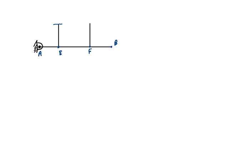These two wires are supported at points C and D respectively. Point B is loaded with a vertically downward force P. The two wires supporting the bar AB at points E and F have length L, and the cross-section area of both wires is the same, given as A. The distances AE, EF, and FB are all equal. We are required to find the stress developed in wire CE, which we call sigma 1.